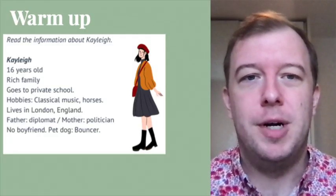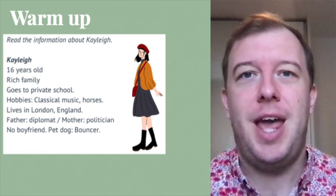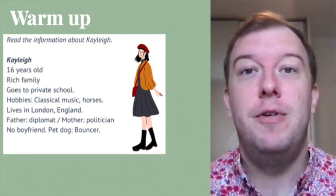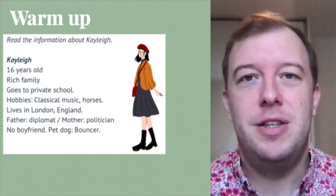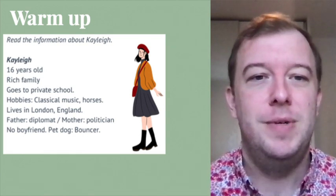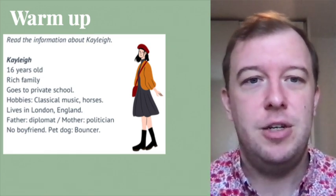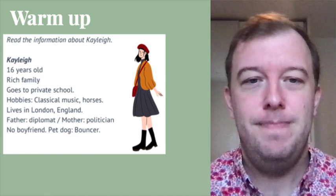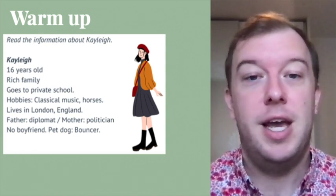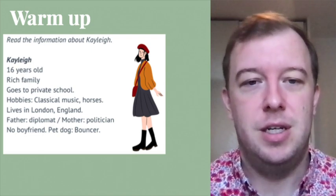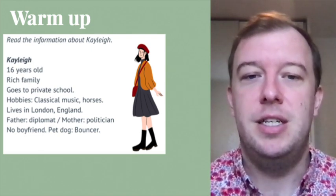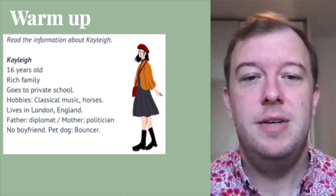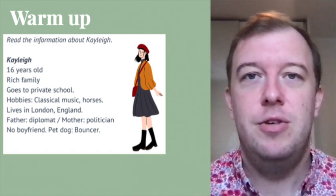So first, a little warm up. Let's read some information about Kaylee here. We'll be reading and talking a little bit more about her later on. Feel free to pause and try this yourself first. So Kaylee — she is 16 years old. She comes from a rich family. She goes to private school. Her hobbies are classical music and horses. She lives in London, England. Her father is a diplomat. Her mother is a politician. She has no boyfriend, but she has a pet dog named Bouncer.